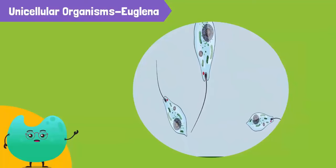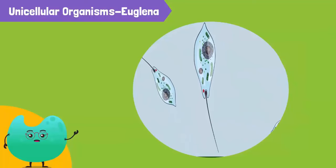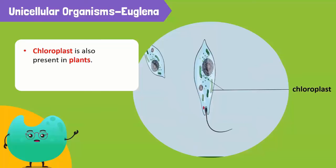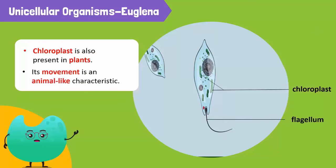It has a chloroplast for photosynthesis, which is also present in plants. But unlike plants, it can move from one place to another with the help of a long whip-like structure called a flagellum.